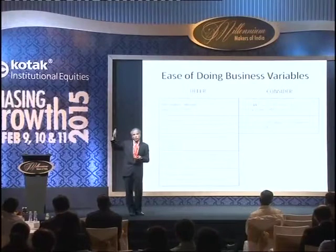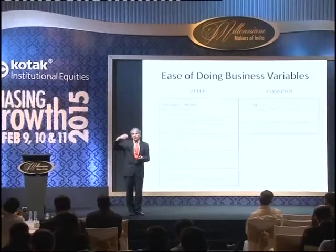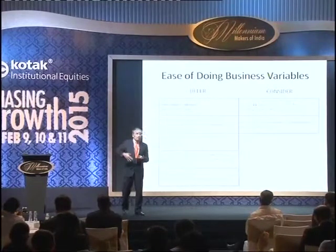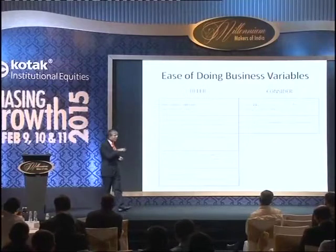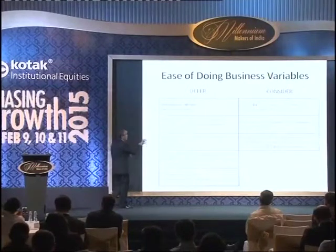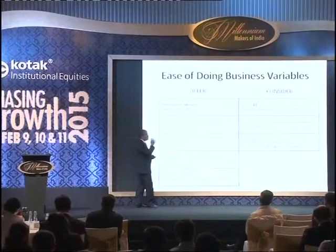Industrial Disputes Act amendment is exactly what Rajasthan did and exactly what Maharashtra is doing — raising the threshold from 100 to 300, and some states are considering 500. I'm just saying this should not be done at the centre.